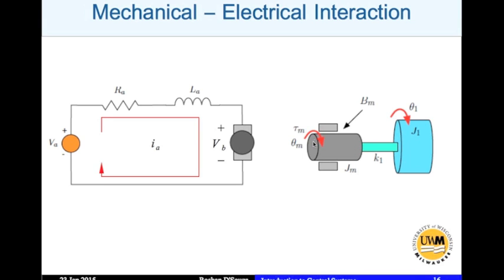On the mechanical side, you have the motor moment of inertia. The motor could have a bearing with some damping, and typically the motor is connected to the load through a flexible shaft which may have stiffness K1. So J1 is the load. Ultimately we are interested in what theta_1 is — the whole goal of this modeling exercise is to find a relationship between theta_1, which is the output, and VA, which is the input.